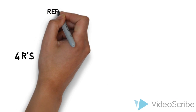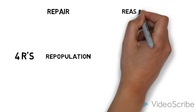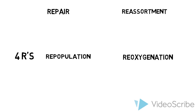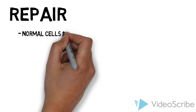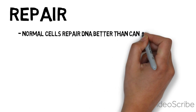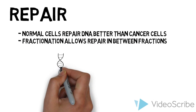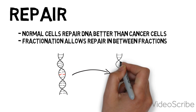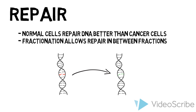An easy way to remember the fundamental mechanisms of radiation therapy is through the four R's: Repair, Repopulation, Reassortment, and Reoxygenation. Let's go through them now. Repair: normal cells repair their DNA damage better than cancer cells. Fractionation of radiotherapy allows normal cells to repair themselves in between treatment fractions.